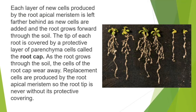Each layer of new cells produced by the root apical meristem is left farther behind as new cells are added and the root grows forward through the soil. The tip of each root is covered by a protective layer of parenchyma cells called the root cap. As the root grows through the soil, the cells of the root cap wear away. Replacement cells are produced by the root apical meristem, so the root tip is never without its protective covering.